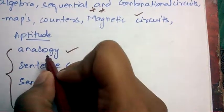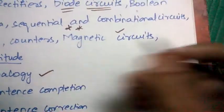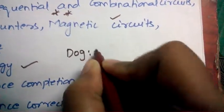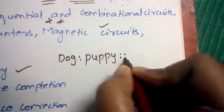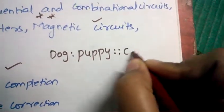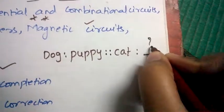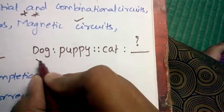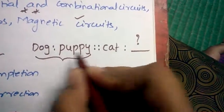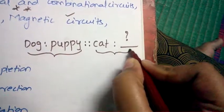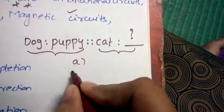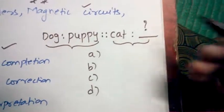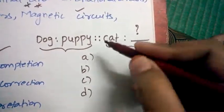Coming to analogy, they'll be asking questions like: dog:puppy::cat:? You need to fill this question mark. So now what we need to do is we need to find out the relationship between these two objects or things, so that we can estimate the relationship between these two. The options will be given - out of these four options you need to select what answer will be best suitable for this blank.